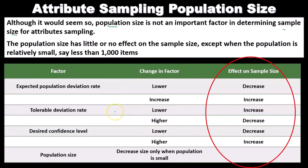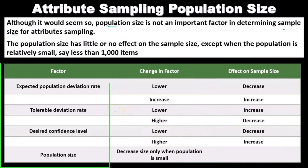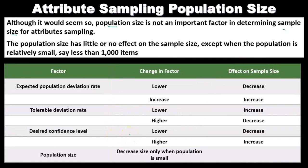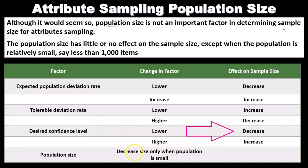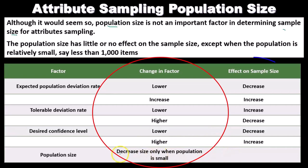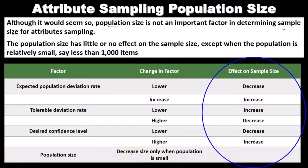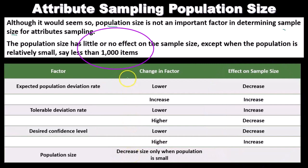The desired confidence level has a direct relationship with sample size: if the desired confidence level decreases, the sample size decreases; if it increases, the sample size increases. Finally, population size only affects sample size when the population is small — say, less than a thousand.